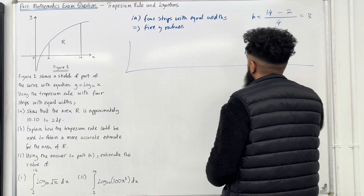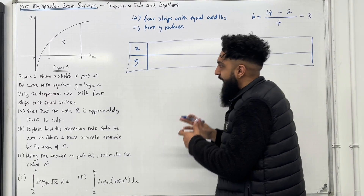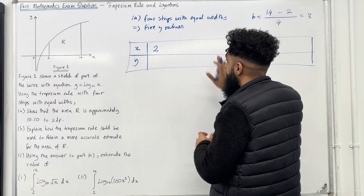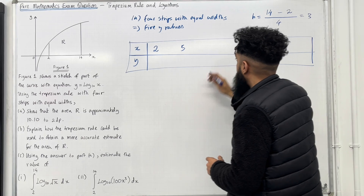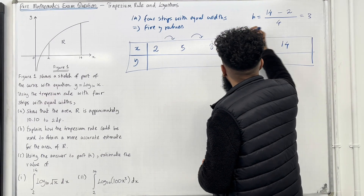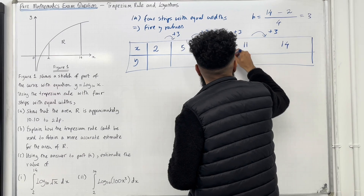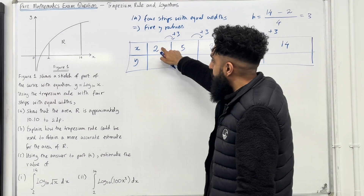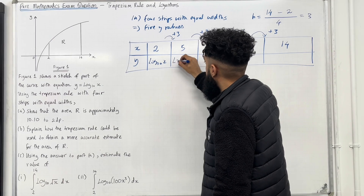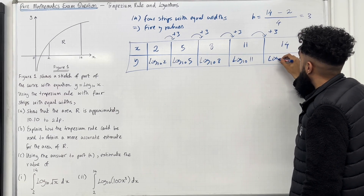Here is my table. I've got an x row and a y row. My first x value is the lower limit, which is 2. Now I'm going to increase the x value by h, which is 3 — so I'm adding 3 each time. Hence my next x value will be 5, followed by 8, followed by 11, and finally 14. Now I'm going to work out the y values. When x = 2, y = log base 10 of 2. When x = 5, y = log base 10 of 5. And so on: log base 10 of 8, log base 10 of 11, and log base 10 of 14.